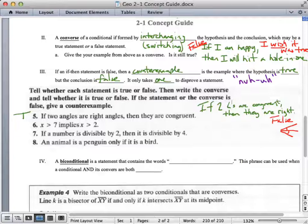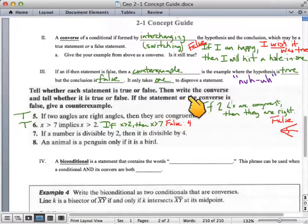Alright, if x is greater than 7, that implies that x is greater than 2. So, yeah, that's true. If 9 is greater than 7, that's also greater than 2. So, if you flip that around, if x is greater than 2, then x is greater than 7. Well, no, because 3, or 4, is greater than 2, but not greater than 7. 4 is the counterexample to this statement. Just like this picture here, or saying that, yeah, 50 degrees are two congruent angles, but those are not right angles. Those are counterexamples.